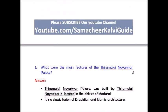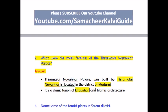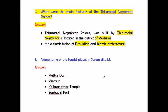Question number two: What were the main features of Thirumalai Naikar Palace? Answer: Thirumalai Naikar Palace was built by Thirumalai Naikar and is located in Madurai district. It is a classic fusion of Dravidian and Islamic architecture.